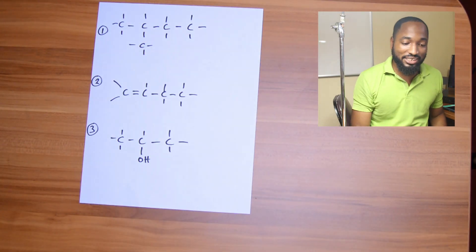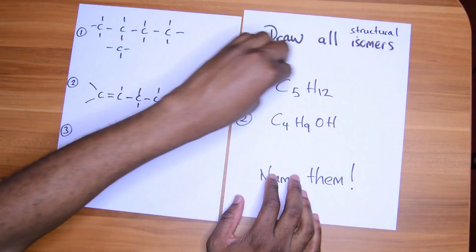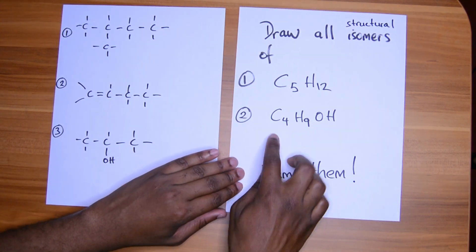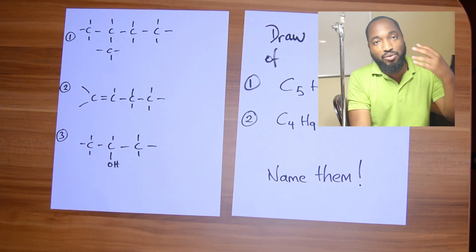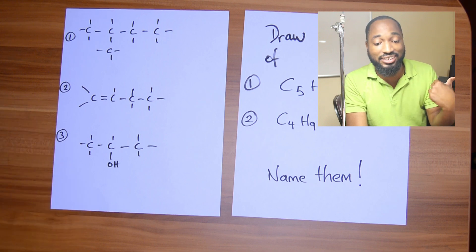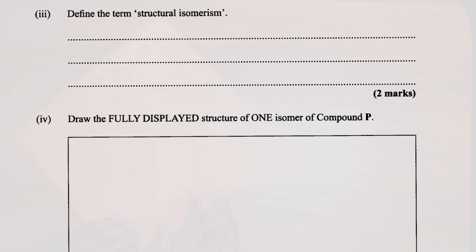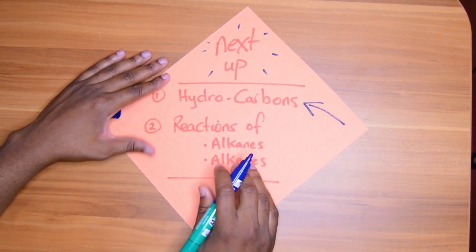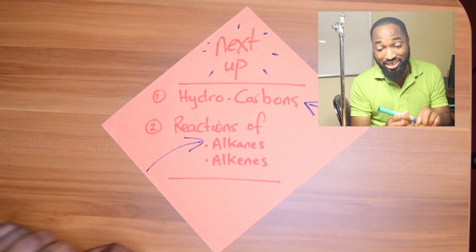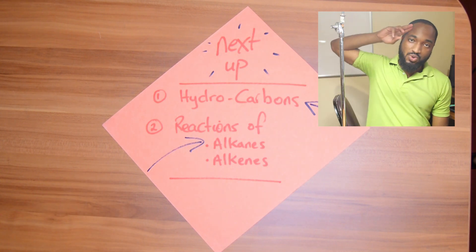Now name these isomers shown here. Then try these questions: draw all the structural isomers of C5H12, draw the isomers of this compound and name them, and try question 3 from the CSEC past paper. What's next in this series on organic chemistry? We'll cover hydrocarbons, then reactions of alkanes and alkenes — that will take us past the halfway mark in organic chemistry. Keep watching, see you next time.